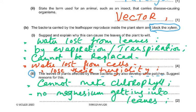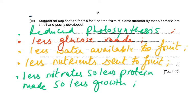Part 2: the leaves of plants affected by these bacteria also develop white patches. White patches mean there is no chlorophyll. Suggest reasons: the plant cannot make chlorophyll, probably because there is no magnesium reaching the leaves. Magnesium comes from the soil via the xylem, and chlorophyll requires magnesium — so if magnesium cannot be transported, there is no chlorophyll.